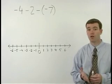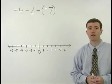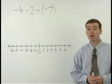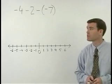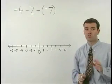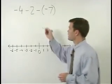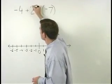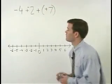This problem combines all the ideas we've been talking about for adding and subtracting positives and negatives. So negative 4 minus 2 minus a negative 7 should first be changed to negative 4 plus a negative 2 plus a positive 7.